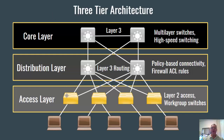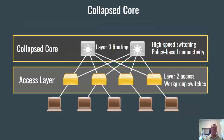Now, if you can't afford all of these network devices, you will see — and it's taught in the curriculum — about a collapsed core, where the collapsed core is the core layer and the distribution layer collapsed into one layer. You can do that with multi-layer switches handling the routing and the policy-based connectivity, and then at the access layer you have your workgroup switches and your PCs.